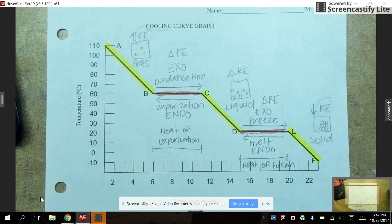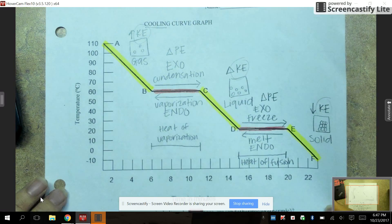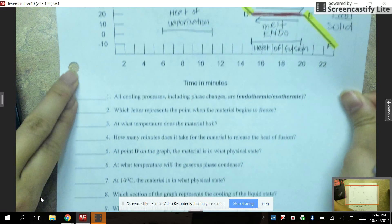So this is an example of a cooling curve graph. You have to be able to interpret both a cooling curve and a heating curve graph. So what you should do right now is you should do some of these questions below.